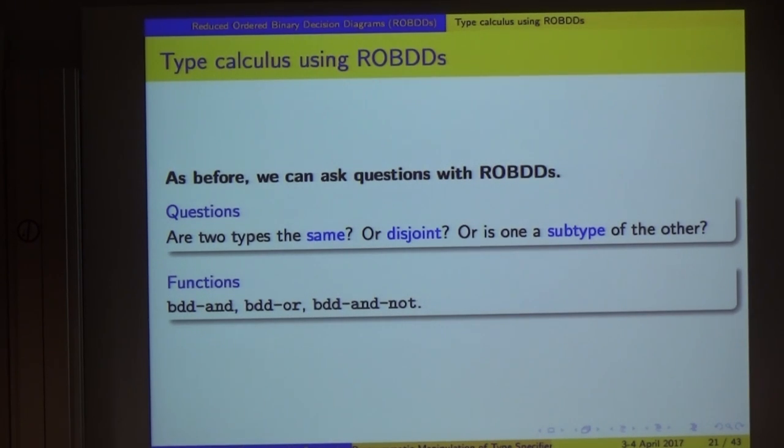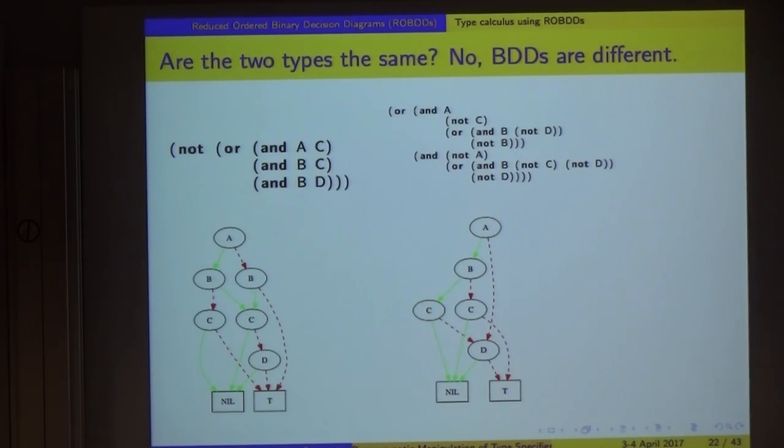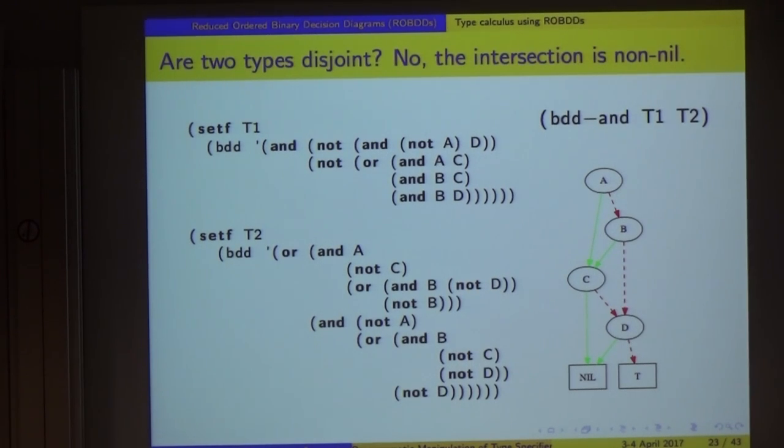Given two binary diagrams representing types, we can still ask the same questions which we could ask before with the native types. We can ask whether two types are the same, whether types are disjoint, whether one type is a subtype of the other. We need these three functions: BDD-AND, BDD-OR, and BDD-NOT, which take BDD objects, combine them in well-defined ways, and come up with an object that represents the resulting combination. If we look at these two types, I can't look at that with my eyes and know that they represent the same type, but if we build the BDDs for them, then we find out the structures are different, so they're not the same type. It can even be arranged such that you not only have two structures which are the same, but you have the exact same structures. You can preserve pointer equality under certain very nice conditions as well.